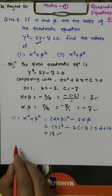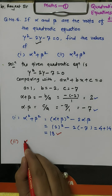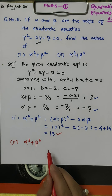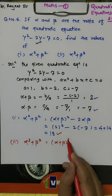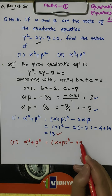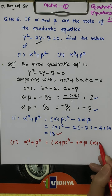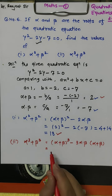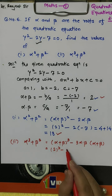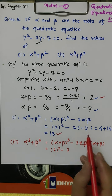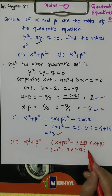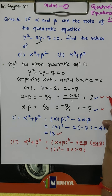Now the second part: alpha cubed plus beta cubed. Alpha cubed plus beta cubed can be calculated with the formula: alpha plus beta the whole cube, minus 3 times alpha into beta, in bracket, times alpha plus beta. Alpha plus beta is 2, and alpha into beta is minus 7.